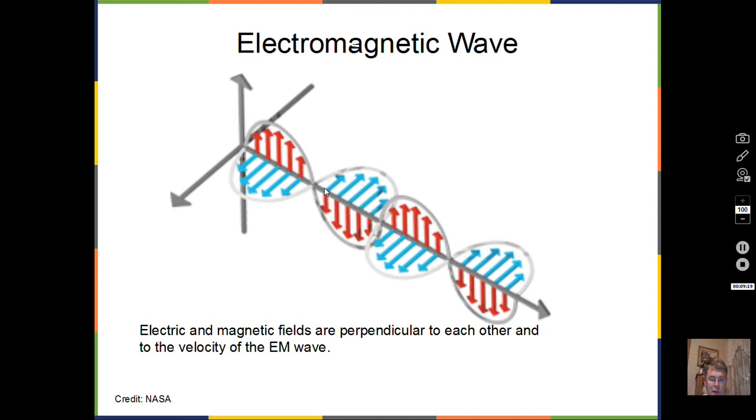Another representation here of the electromagnetic wave. Let's say the electric field is the red, the blue is the magnetic field, and we have the velocity of the wave in this direction. The electric field is perpendicular to the magnetic field. Both fields are perpendicular to the velocity—this is the construction of the electromagnetic wave.